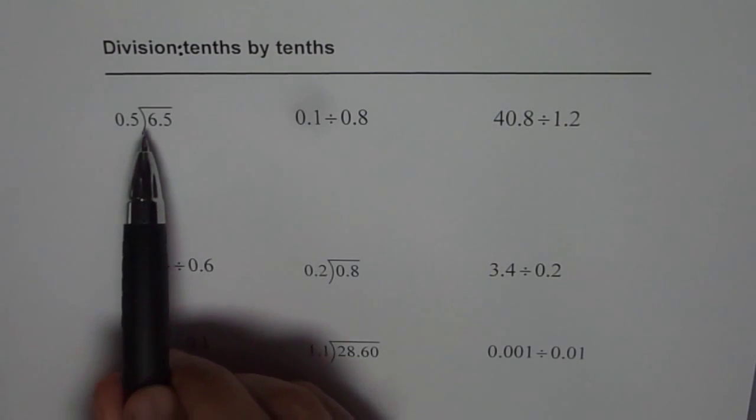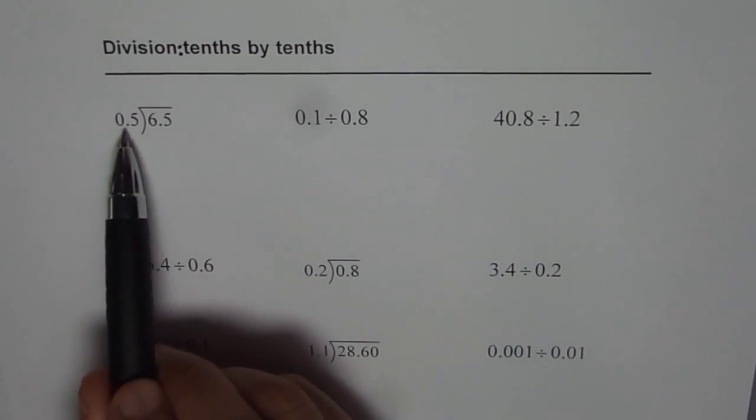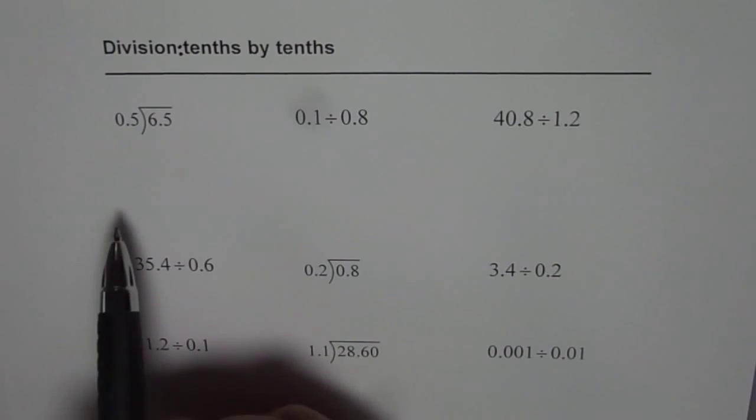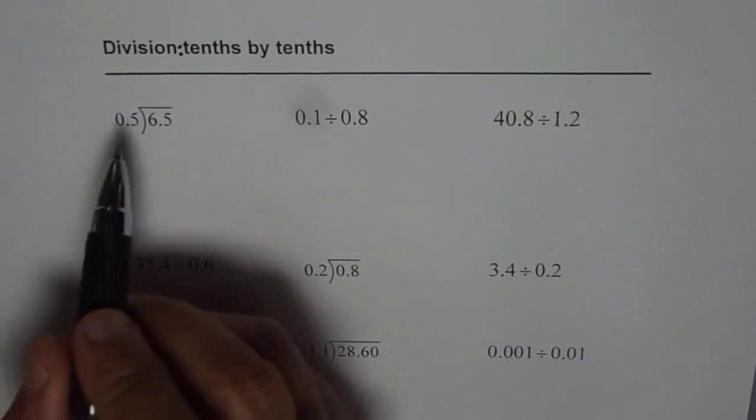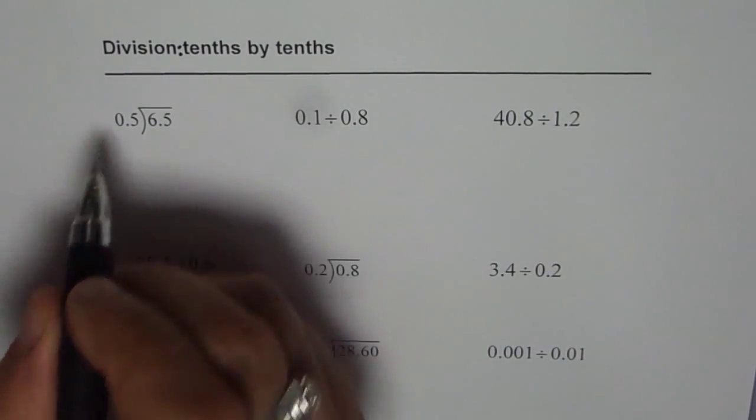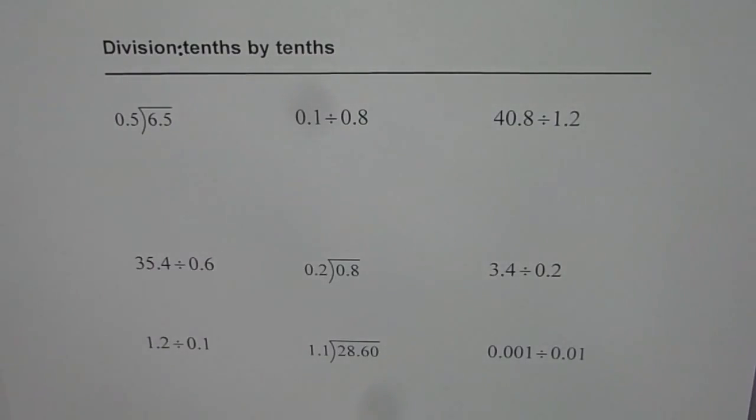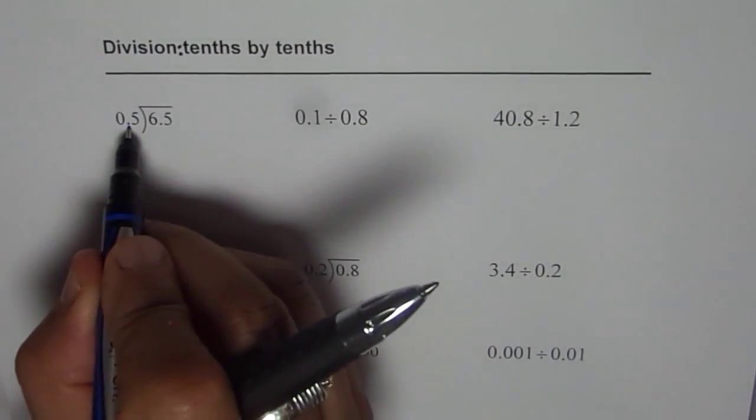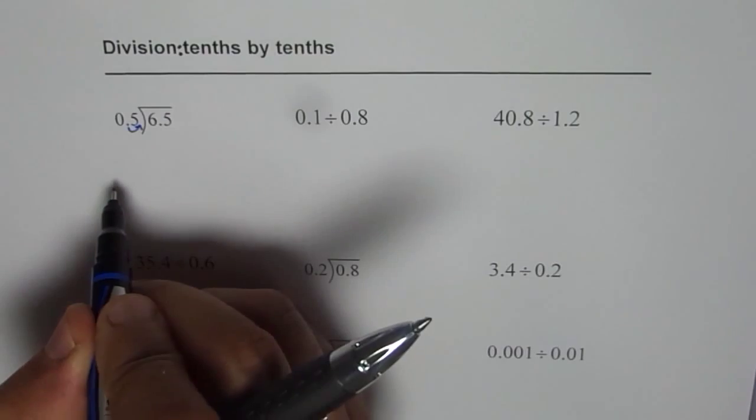First one is 6.5 divided by 0.5. Whenever we divide by a decimal number, it is a good practice to make divisor a whole number, which we can do in this case by moving decimal one place to the right. So if I move this decimal one place to the right, what do I get? I get 5 as my divisor.